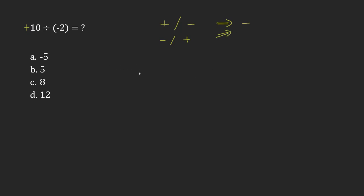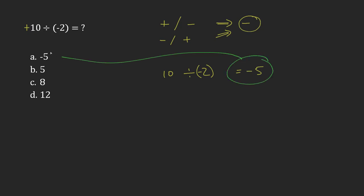So it's really just going to be the same as 10 divided by 2, which is 5. But because I have these mixed signs, it's going to be a negative result. So the answer here is negative 5.